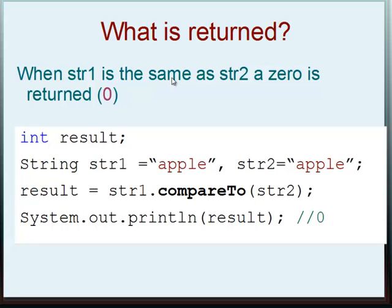When string1 is the same as string2, a zero is returned. So once again, we have result here, apple and apple. String1.compareTo(string2), print out the result, we have zero. Apple and apple are the same.